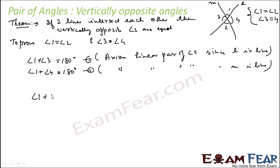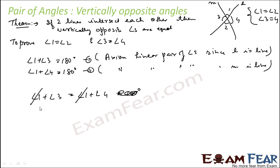If we compare these two equations — angle 1 plus angle 3 equals 180, and angle 1 plus angle 4 equals 180 — then angle 1 plus angle 3 is equal to angle 1 plus angle 4. Canceling angle 1 from both sides, we get angle 3 is equal to angle 4.